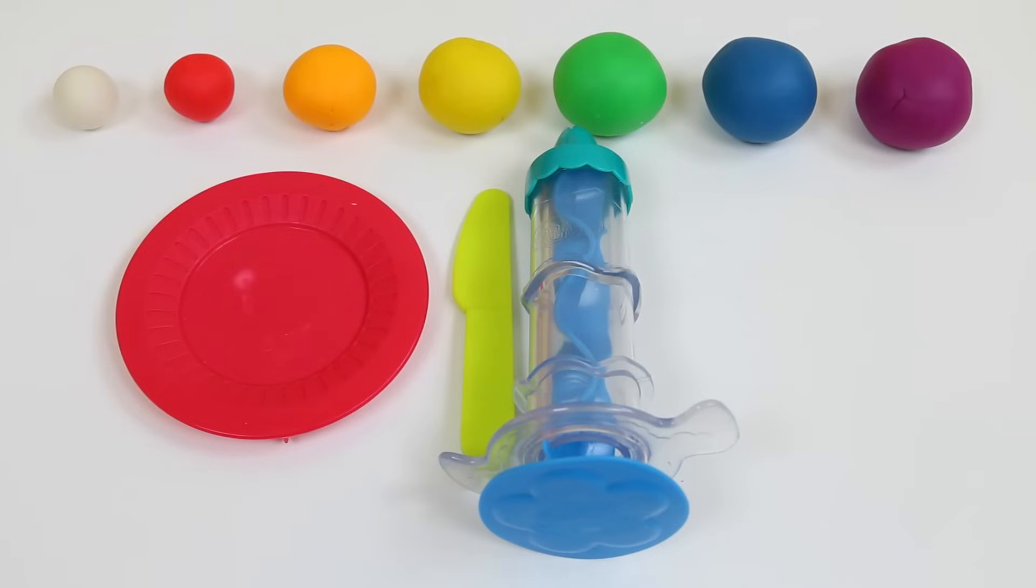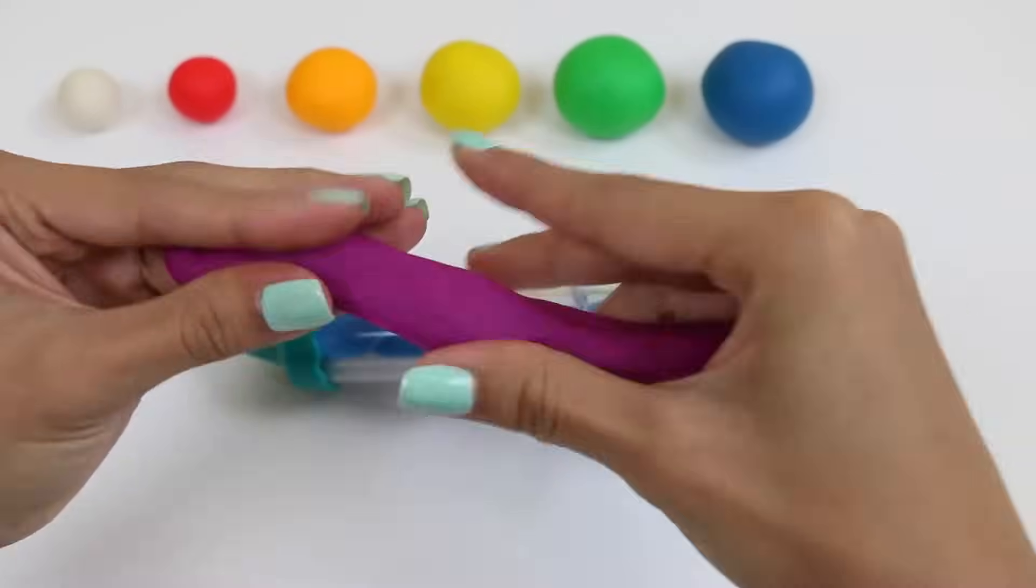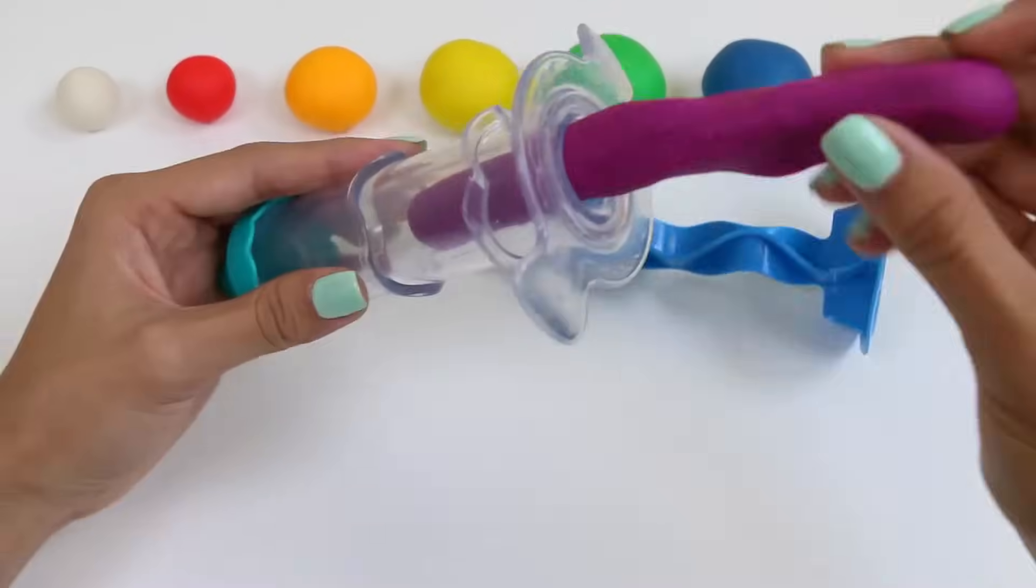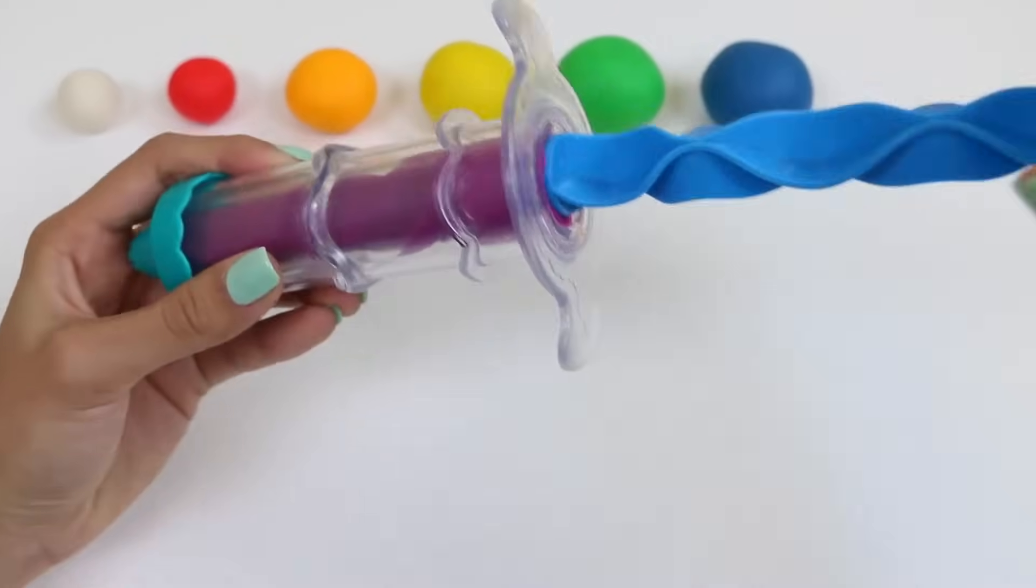Let's get started. So for this swirl we're gonna start from the bottom up, so what's the last color of the rainbow? If you said purple you're right. Let's start molding the purple into a long cylinder shape so we can put it in our extruder. The purple is gonna be the base so it has to be the largest, and then we'll slowly get smaller from there.